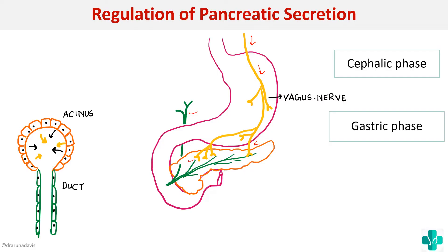Next is the gastric phase, which is again stimulated by the vagus nerve itself. Whenever there is distension of the stomach or duodenum, this will cause stimulation of the vagus nerve — that is why it is called a vagal-vagal reflex. So the gastric phase is again due to the vagus nerve.